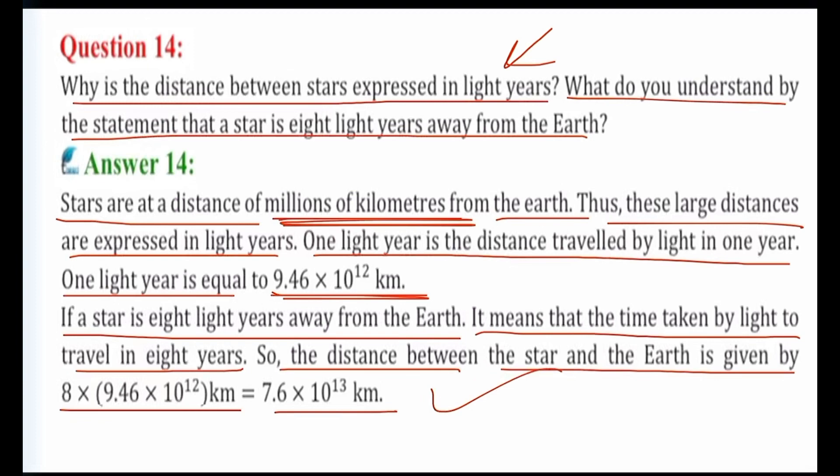The distance between stars is very large. That is why we cannot express it in terms of kilometers. That's why we express this distance in another unit known as light year. So what does one light year mean? One light year is the distance traveled by light in one year. So if a star is eight light years away from Earth, it means that the light from that star will reach the Earth in eight years. So I hope it's clear.